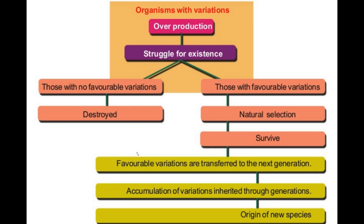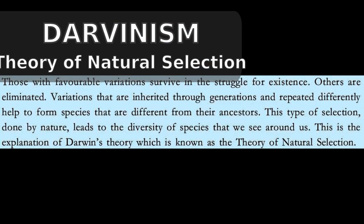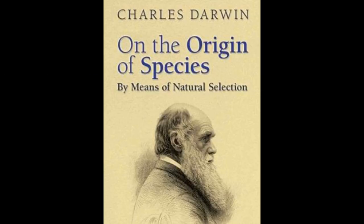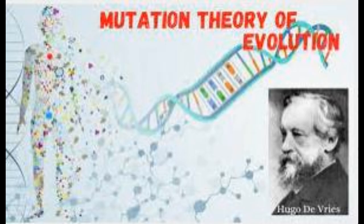In other words, nature selects those organisms having favorable variations to exist. Accumulation of variations inherited through generations leads to the formation of new species. Darwin presented his ideas in his book named 'The Origin of Species by Means of Natural Selection,' but he could not explain the reasons for such variations because he had no knowledge of genes or chromosomes.